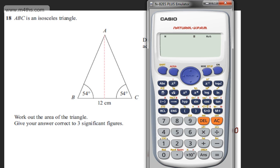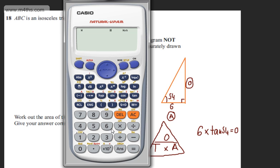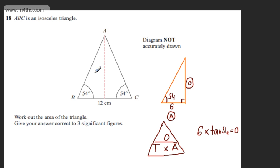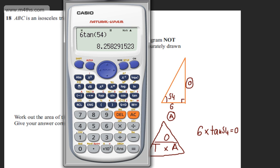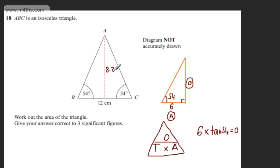So in a calculator making sure you're in degrees mode we've got shift mode 3. We're simply going to do 6 tan of 54 degrees and that gives me 8.258 and so on. So this is going to be 8.258 dot dot dot.